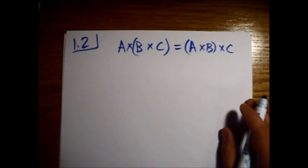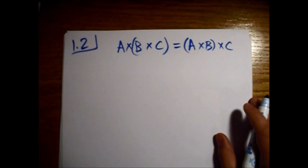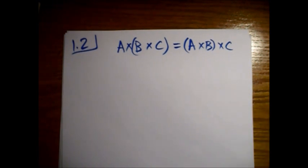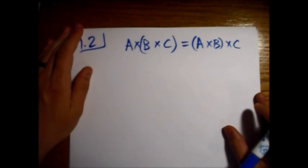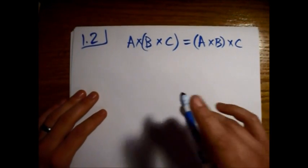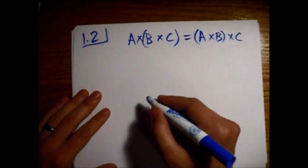And Griffiths gives us a little bit of a hint. He says if it's not true, provide a counterexample, the simpler the better. So let's do a really simple counterexample and just make two of these things the same vector.